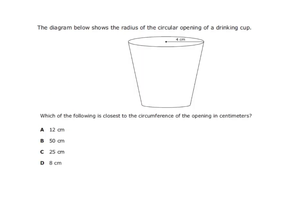This example says the diagram below shows the radius of a circular opening of a drinking cup. Which of the following is the closest to the circumference of the opening in centimeters? Again, I'm going to start with what's the important information. It says that the cup is showing us the radius, and then it wants to know the closest measurement for the circumference.